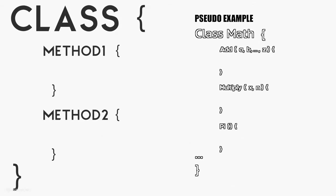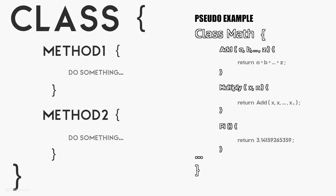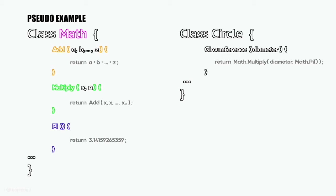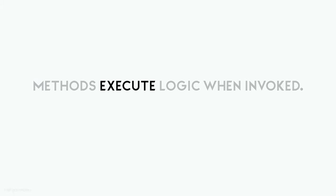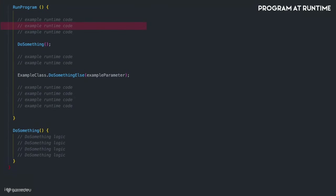In modern programming, we define classes, and classes have these internal functions called methods. Methods perform specific logic that we also define. To use these methods, we call or invoke them in other parts of our class or other parts of our codebase. Sometimes methods require data called parameters that are used in the method's logic, and sometimes they don't. Today we want to take a look at a very specific aspect of methods: execution — the execution of a method's logic.